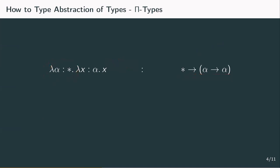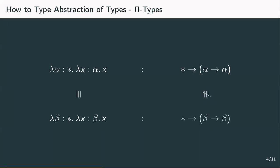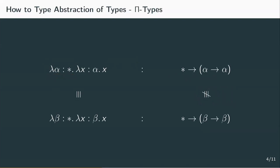The problem becomes clear when we compare this polymorphic lambda function to an equivalent one. We just change the names of the bound variables: lambda beta, lambda x of type beta dot x. As it's another polymorphic identity function, it should have the same or at least an equivalent type. By our earlier approach, this term would have the type star to beta to beta, but this is not the same type as before, nor is it equivalent. We need to encode the polymorphism not only in the terms but also in the types — basically a for-all type.